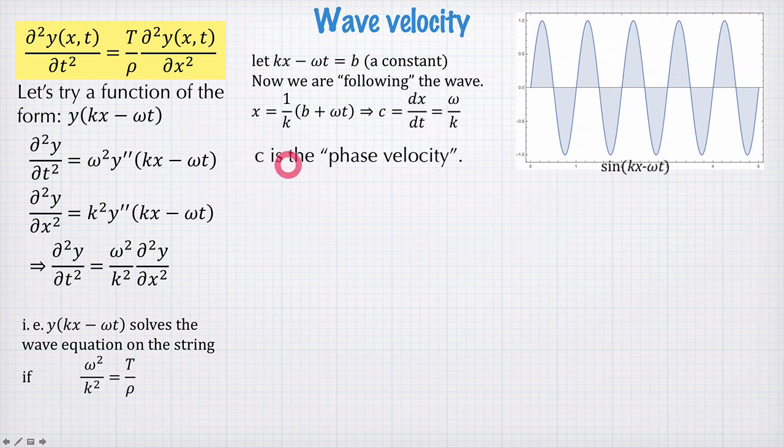So c, the speed of the wave, is called the phase velocity and for the string, c is equal to the square root of the tension divided by the linear density.